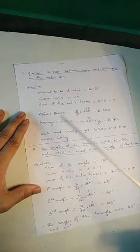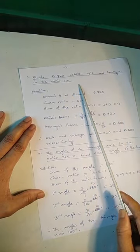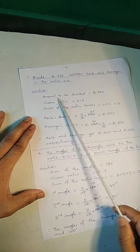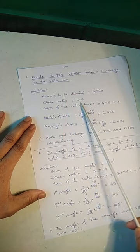Now here one sum. Divide Rs. 720 between Avik and Ananya in the ratio of 4 is to 5. So solution, how to do? Amount to be divided, that is 720. Given ratio is 4 is to 5.